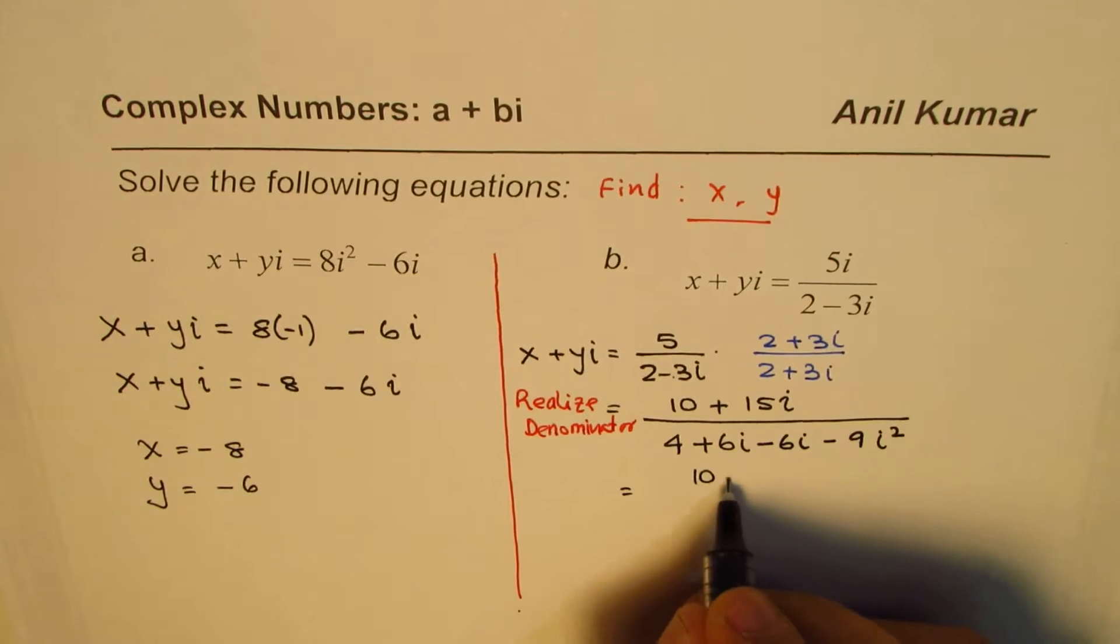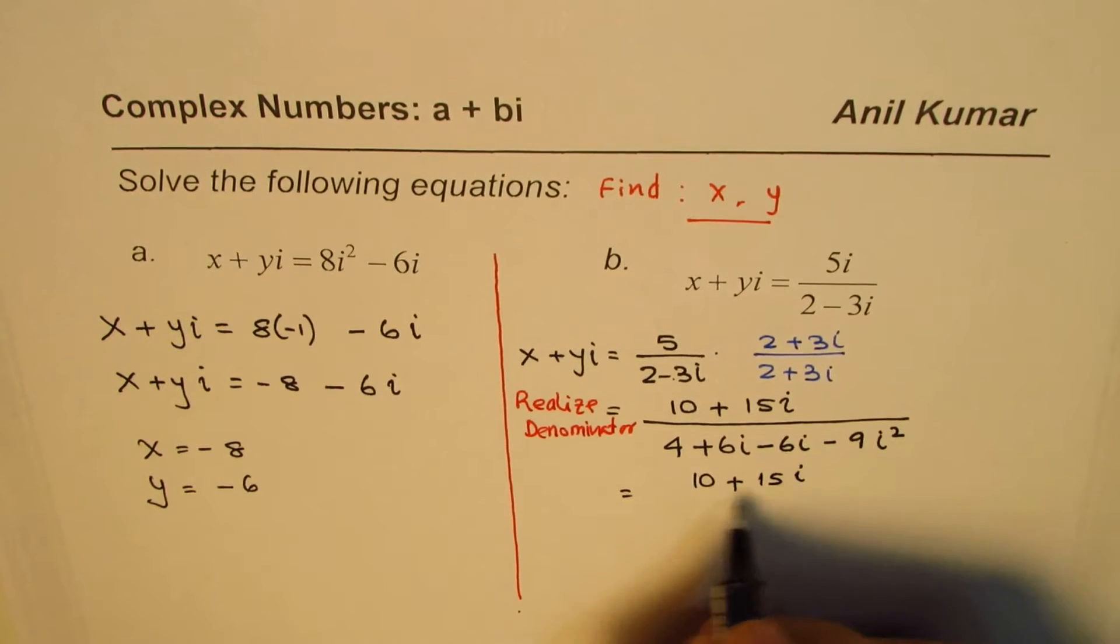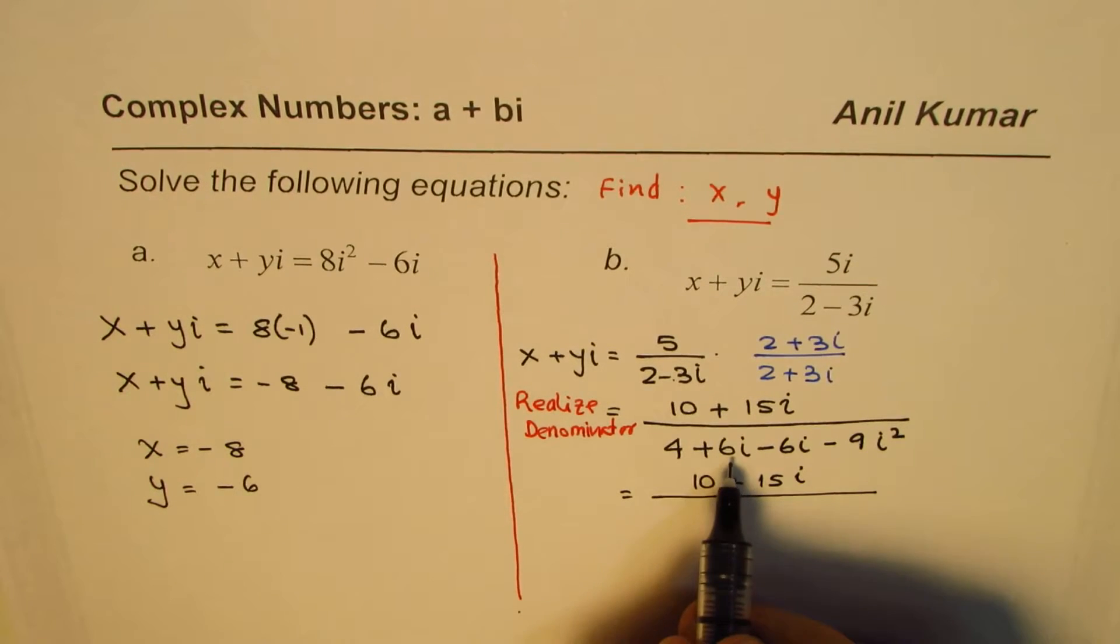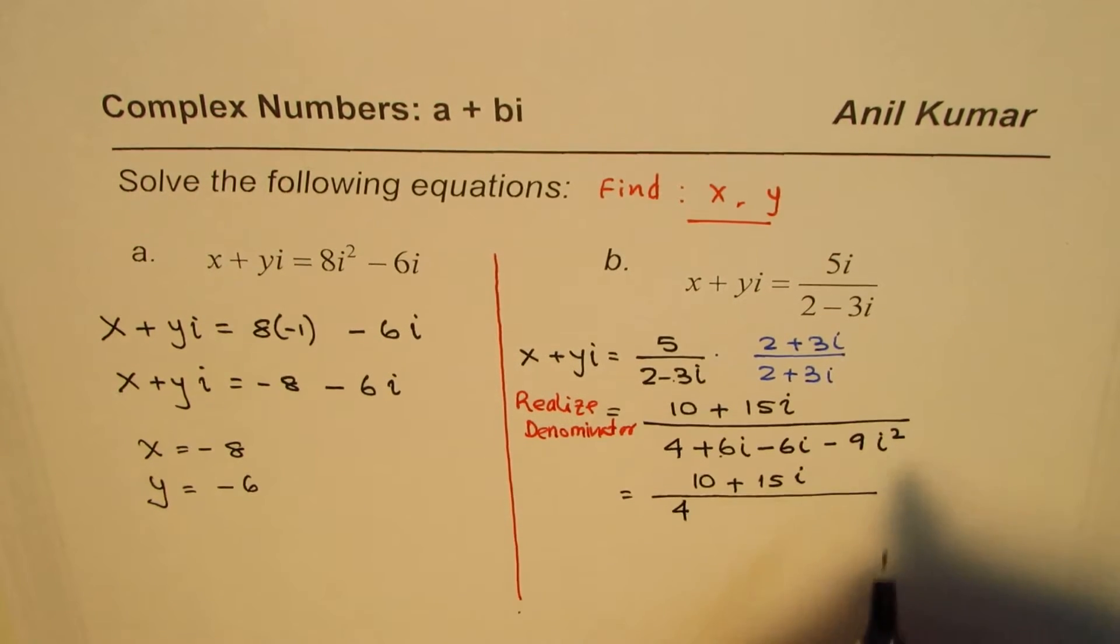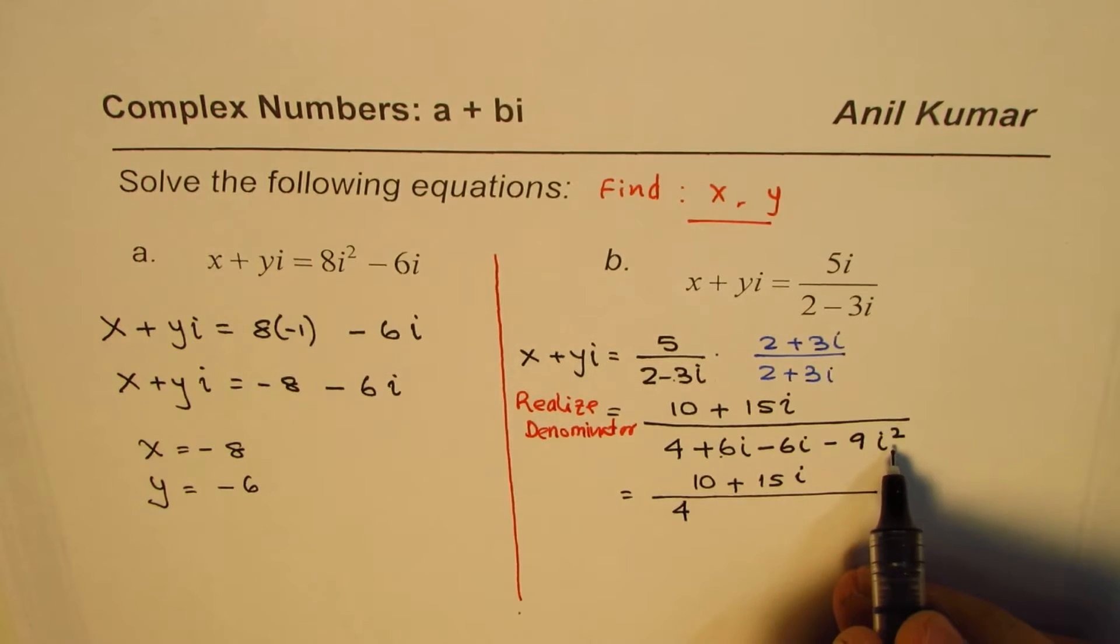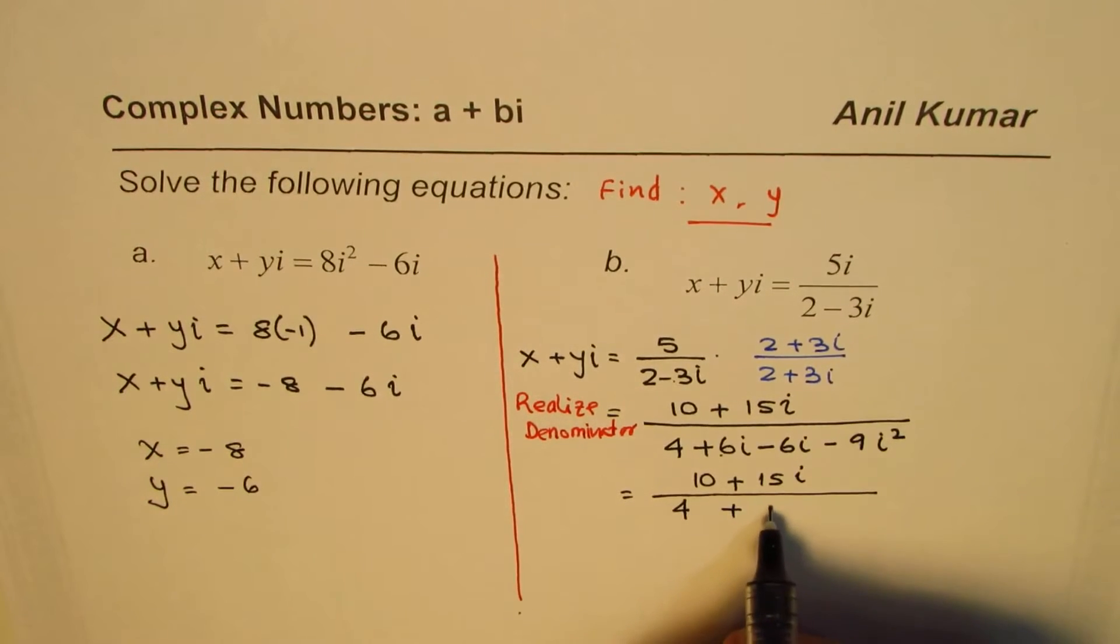So that gives us 10 plus 15i in the denominator. 6i and minus 6i, this complex term, they cancel out. We are left with 4. i squared is negative 1, so that makes this as positive 9.